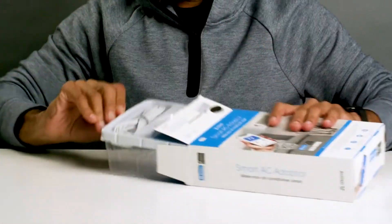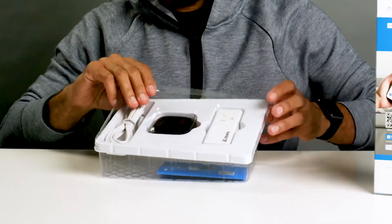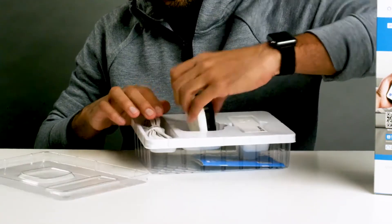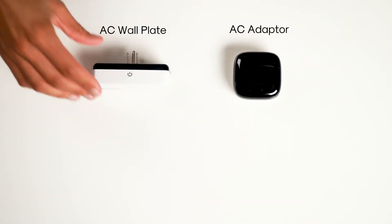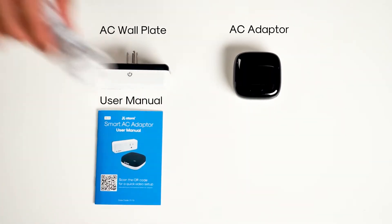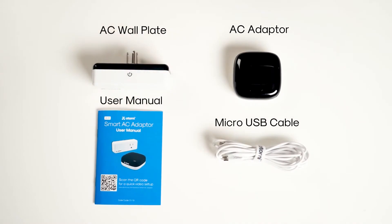Let's open up the box. It contains four components: the Atomi Smart AC Adapter, Smart AC Wall Plate, User Manual, and a 10-foot micro USB cable.